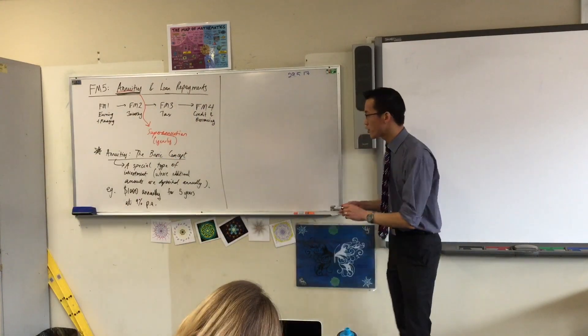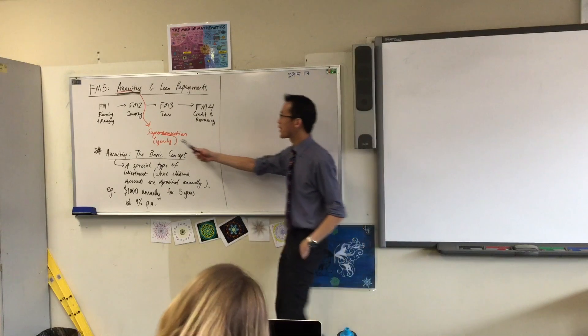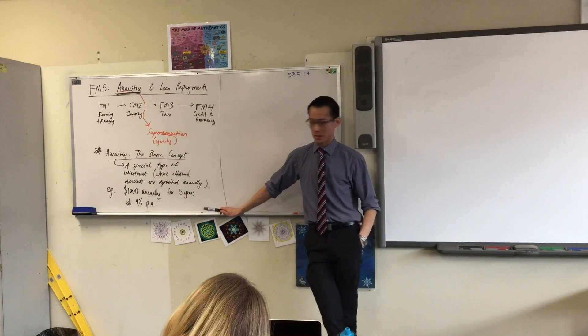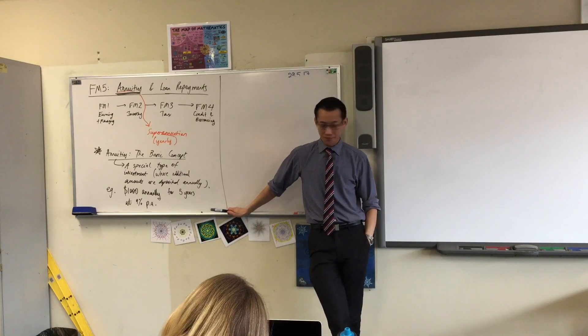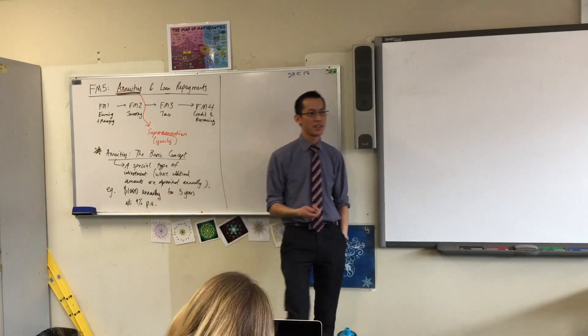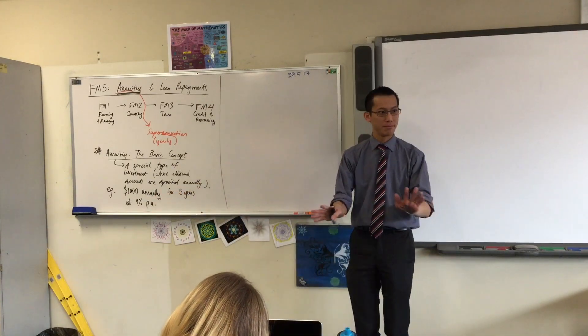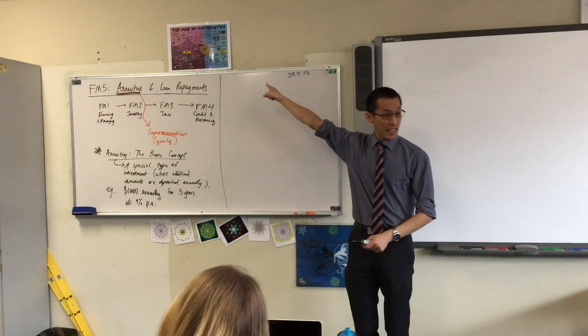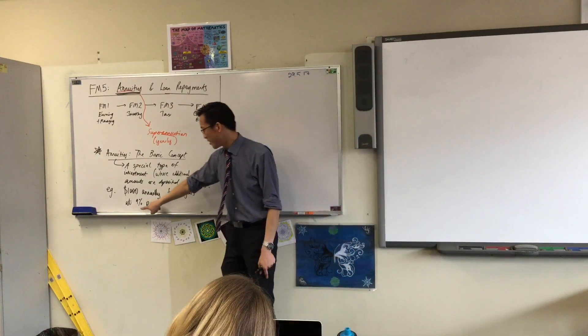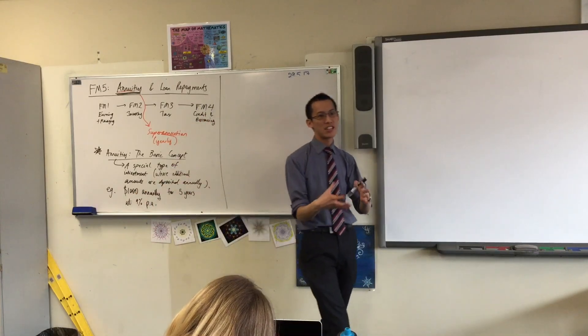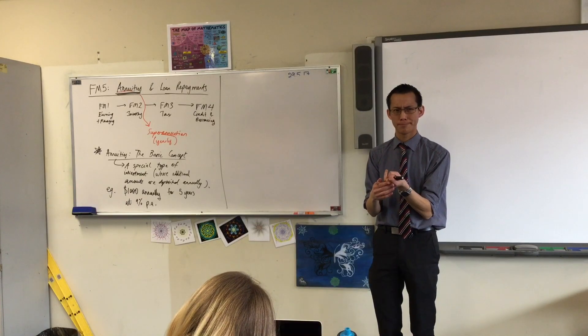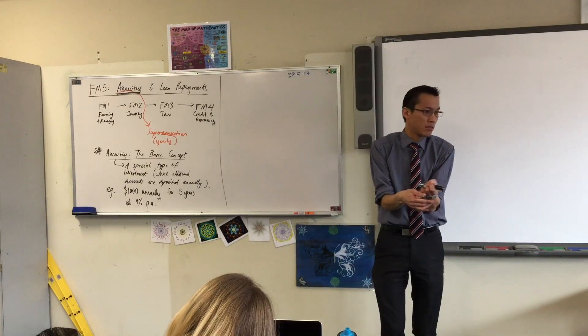Now, let me contrast this situation here to what we're looking at all the way back in FM2. A question that you might get in FM2 is, you've got $1,000, you're going to put it in the bank for five years, and it's going to invest at 9% per annum. Full stop. Back in FM2, I would have said, here's the sum of money, here's an amount of time, here is an interest rate. And then you can crunch that into either compound interest or simple interest.